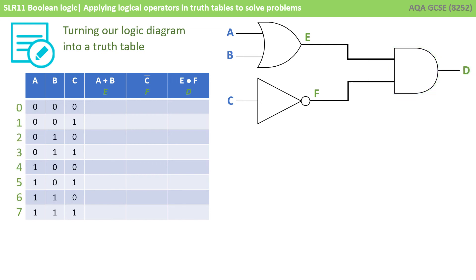Now we fill in all the various combinations for our three inputs A, B, and C. As mentioned in a previous video, the easiest way to do this is to count up in binary. The first row represents zero: zero, zero, zero. The second row is the number one: zero, zero, one. Then two, three, all the way up to seven, which is one, one, one. We can be sure we've got every possible combination of three inputs because we've gone from three zeros to three ones.